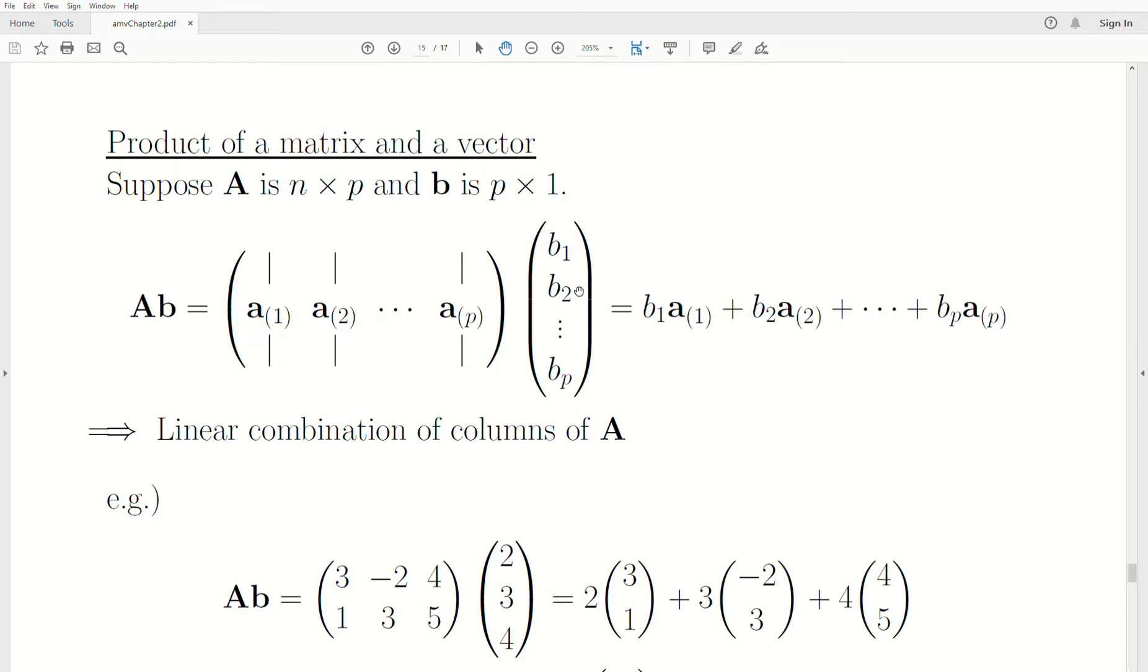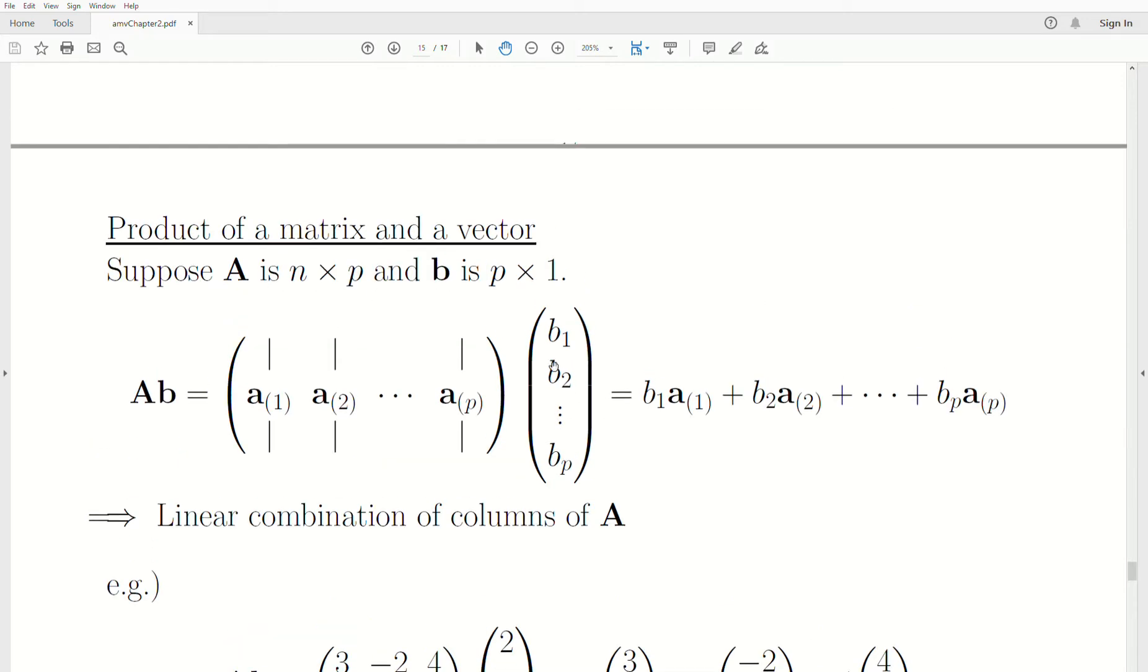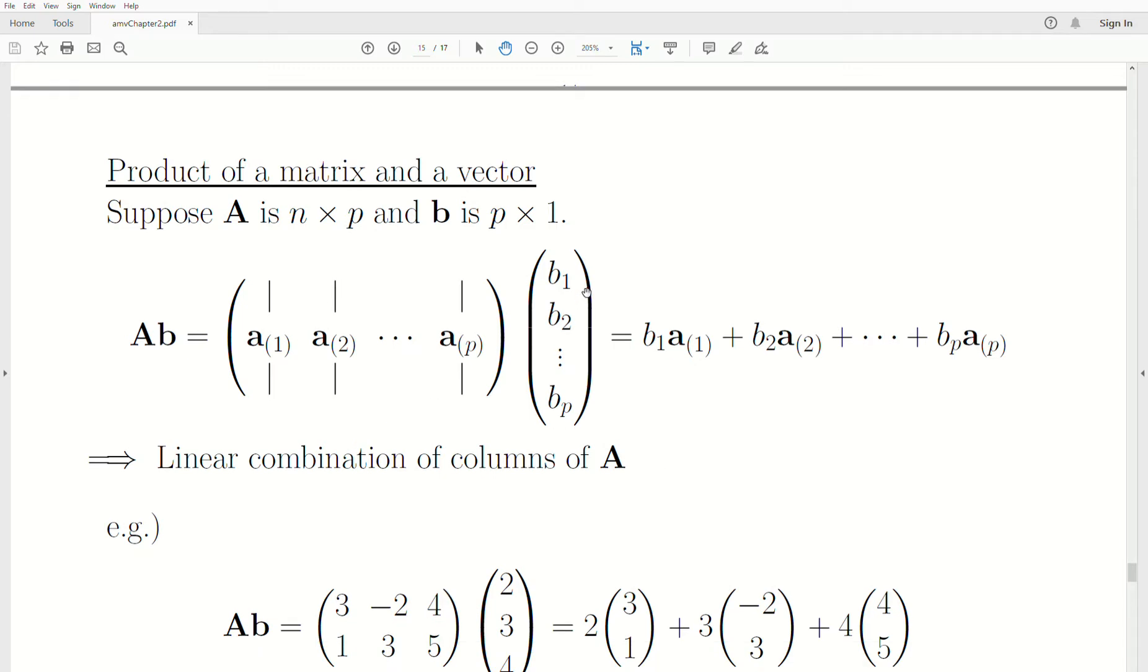When we take this product, we take the first row times this, the second row times this vector, and so on. But notice that b1 is being multiplied by this first column every time, and b2 is being multiplied by this second column every time.